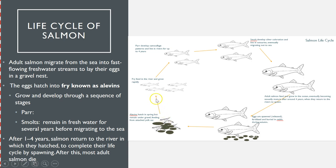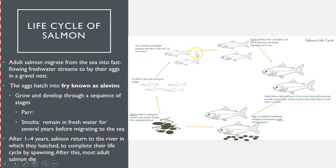Once their yolk sac is gone, they develop into the fry stage. The fry are still considered larval organisms, but they are now feeding on their own and growing very quickly. From there they develop into parr, which are characterized by being larger and beginning to develop camouflage on their bodies. They live in the river for up to four years, and the camouflage helps prevent them from being hunted by predators.